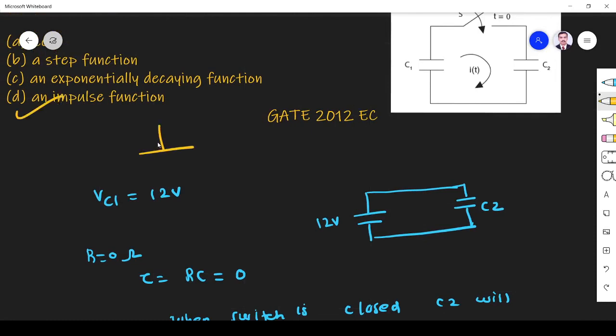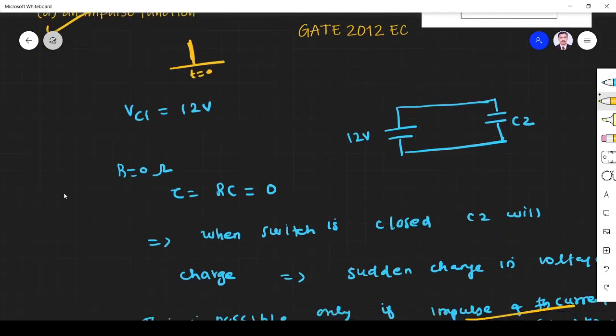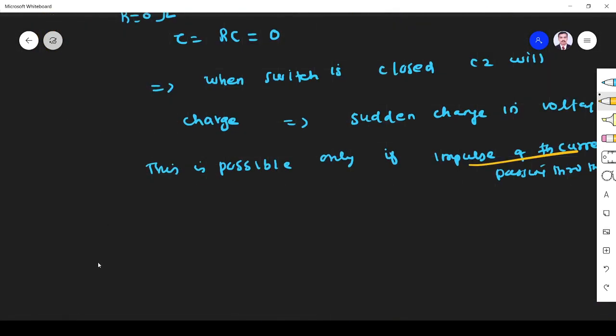We know unit impulse will be like this, it will give the sudden change at a particular time t equals 0. Sudden change of capacitor voltage is possible only when impulse current passes through that. Otherwise, we know that Vc(0-) equals Vc(0+).